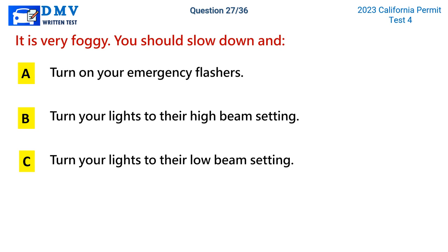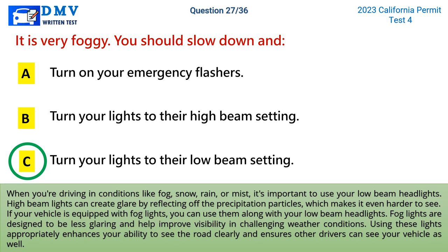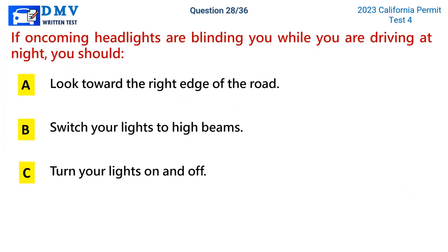Question 27: It is very foggy. You should slow down and. A) turn on your emergency flashers, B) turn your lights to their high beam setting, C) turn your lights to their low beam setting. The correct answer is C. When driving in conditions like fog, snow, rain, or mist, use your low beam headlights. High beam lights create glare by reflecting off precipitation particles, making it harder to see. If your vehicle has fog lights, use them along with low beams — they are designed to be less glaring and improve visibility in challenging weather conditions.